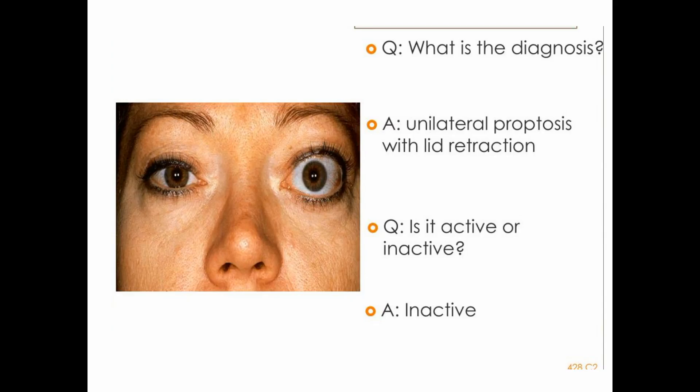Look at this picture — one eye is normal and the other is proptosed. What is the diagnosis? Left unilateral proptosis with lid retraction. What are the different diseases in which proptosis occurs? They include thyroid eye disease, which can be unilateral or bilateral.